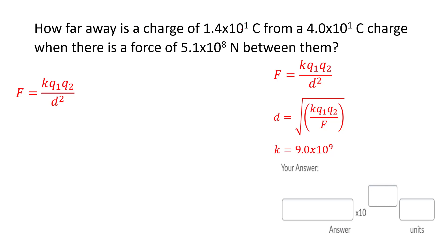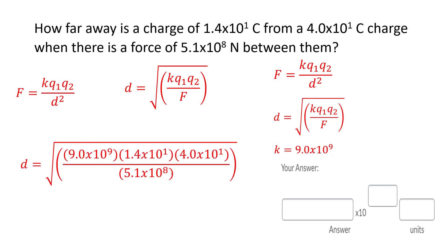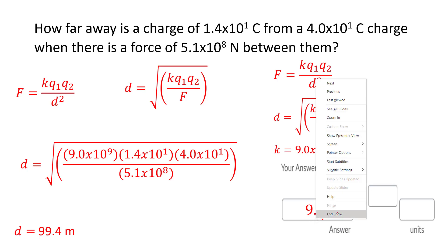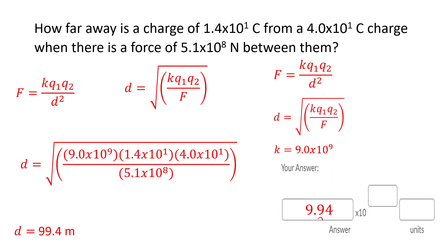How far away is a charge of 1.4 × 10¹ Coulombs from another charge? We're solving for distance, so we rearrange Coulomb's Law for d. Plugging in the given values correctly — keeping everything under the square root — you should get 99.4 meters. In scientific notation that's 9.94 × 10¹ meters. The check: type 9.94 × 10¹ into your calculator and confirm you get 99.4.